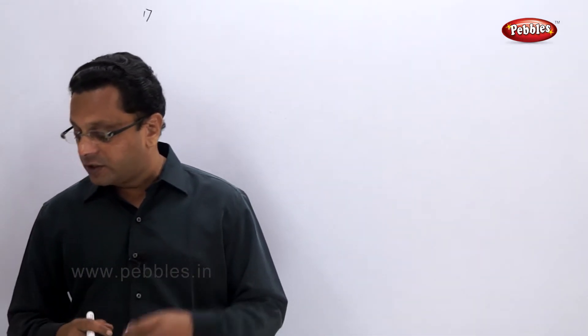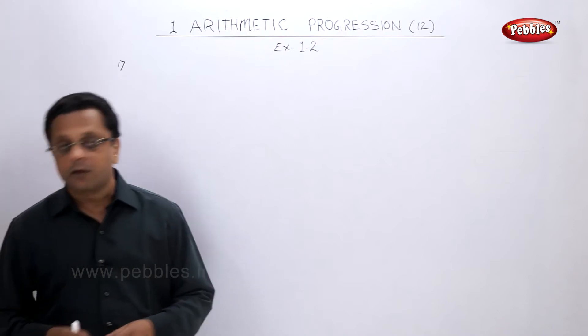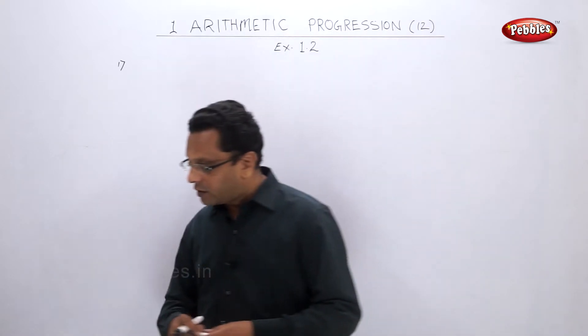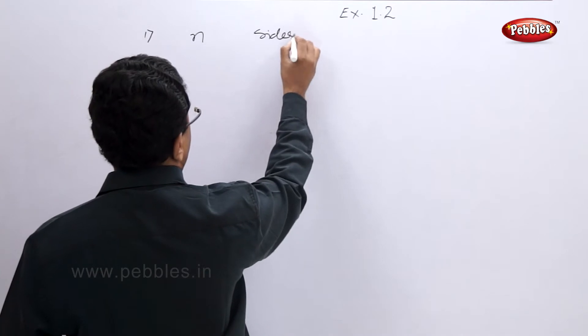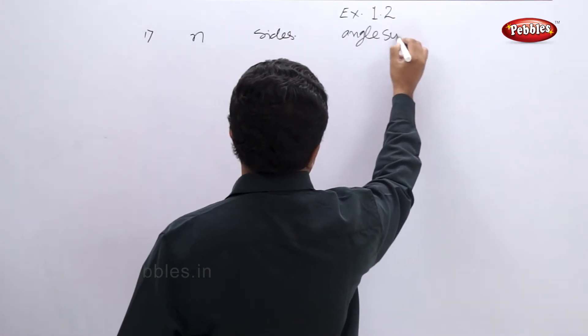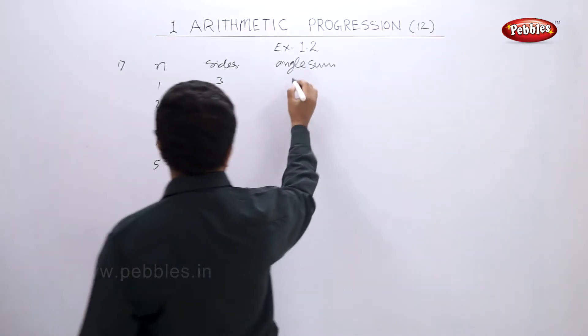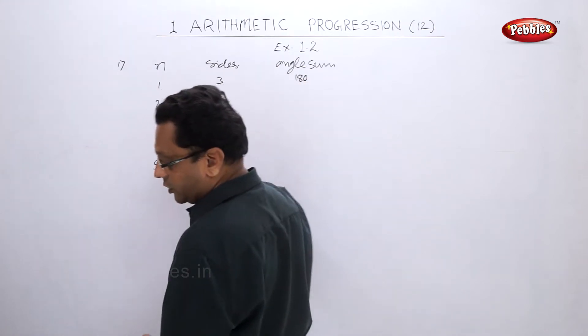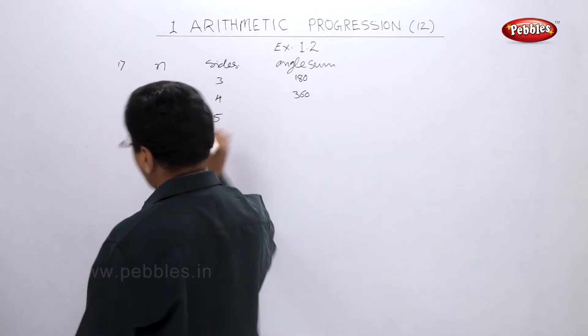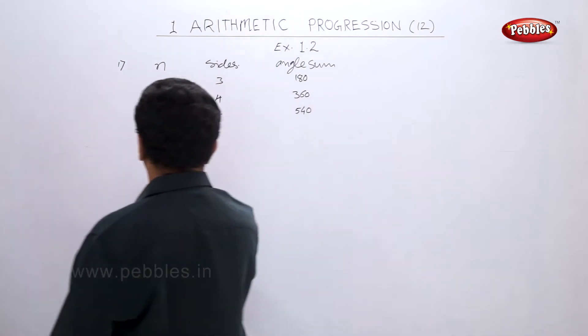Let us see a few solid examples. The sum of angles of a triangle is 180°, of a quadrilateral is 360°, of a pentagon is 540°, and so on. Assuming this pattern, find the sum of angles of a dodecagon — a polygon which has 12 sides. We set up a table: sides 3, 4, 5... and angle sums 180, 360, 540...